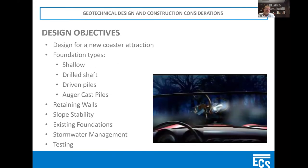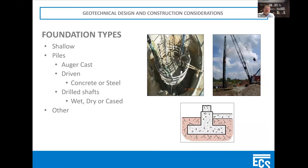Our design objectives: we know there's going to be a new coaster, buildings, slopes, foundations for the coaster and buildings, retaining walls, existing foundations, and stormwater management. The first thing we always look at is foundations — what kind of foundations are we going to use to support the structure? Everything costs money, and we want to make sure everybody's being smart about it because these things can get very expensive depending on what kind of foundation system we use.